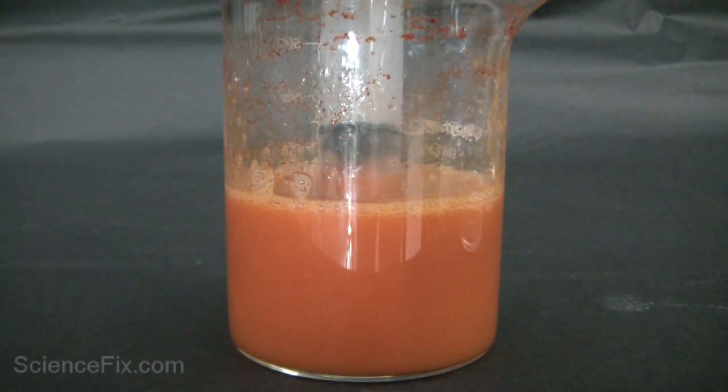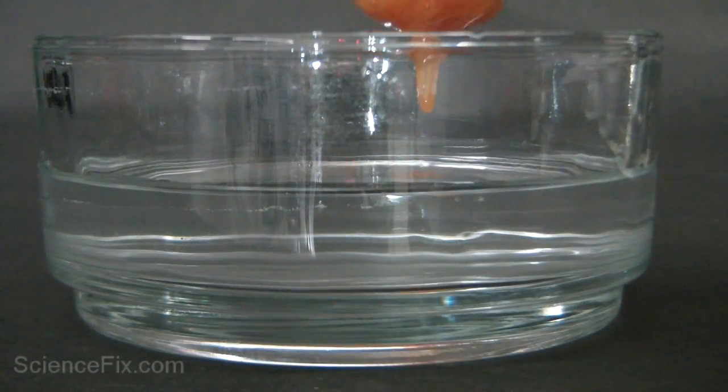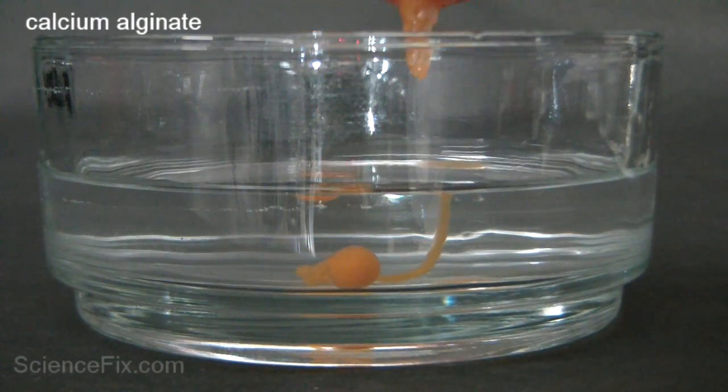Next we're going to use a syringe to drop some of that watermelon juice with the sodium alginate and then we're going to gently drop some of this solution into the calcium chloride solution.